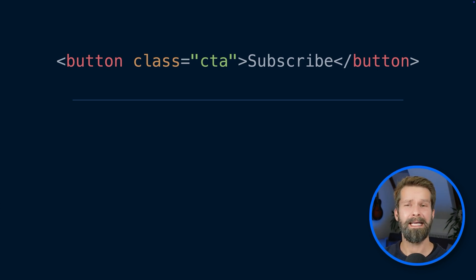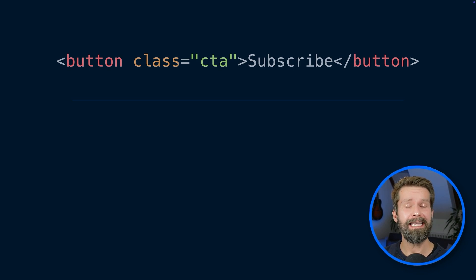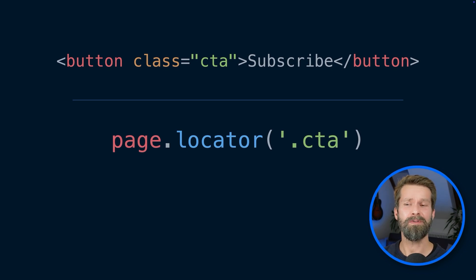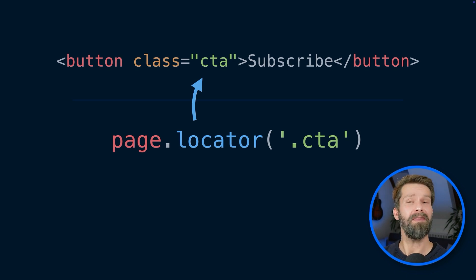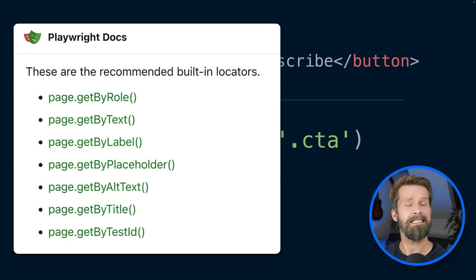Here we have a button element with the class CTA and the inner text 'subscribe'. How would you locate this button with Playwright? You might say, let's use page.locator and reach for the class CTA. But this approach has one downside — you're testing implementation details, and if someone changes the class to something else, like CTA-main or CTA-bold, then your end-to-end tests will fail. That's why page.locator isn't in the list of recommended Playwright locators.